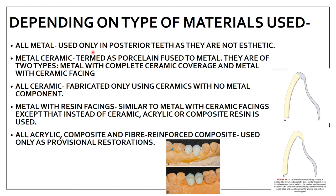All-ceramic is fabricated using only ceramics with no metal component. Metal with resin facing is similar to metal with ceramic facing, except that instead of ceramic you are using acrylic or composite resin. All-acrylic composite or fiber-reinforced is used only as a provisional restoration. The basic difference is that in metal with ceramic facing, the ceramic coverage covers the incisal edge also, whereas with acrylic facing it does not cover the incisal edge.